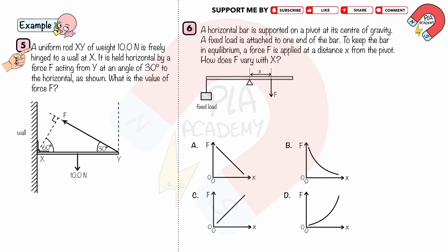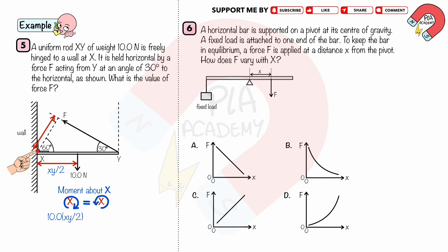Work Example 5: A uniform rod XY of weight 10 N is freely hinged to a wall at X. It is held horizontal by a force F acting from Y at an angle of 30 degrees to the horizontal. Taking moments about point X: the 10 N force acts at a perpendicular distance of half XY, giving a clockwise moment of 10 × ½XY. The force F acts at a perpendicular distance of XY cos 60°, giving an anticlockwise moment of F × XY cos 60°. Solving gives F = 10 N.